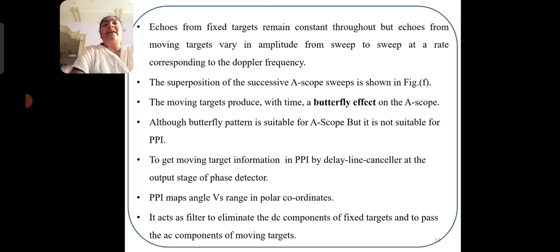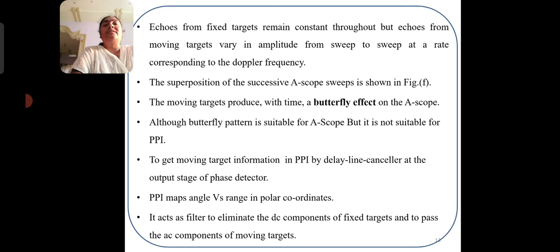Echoes of fixed targets remain constant throughout, but echoes from moving targets vary in amplitude from sweep to sweep at a rate corresponding to the Doppler frequency. The superimposition of successive A-scope sweeps shows the butterfly effect. Although the butterfly pattern is suitable for A-scope, it is not suitable for PPI. To get moving target information on PPI, a delay line canceller is used at the output stage of the phase detector. PPI maps angle versus range in polar coordinates and acts as a filter to eliminate DC components of fixed targets and pass AC components of moving targets.